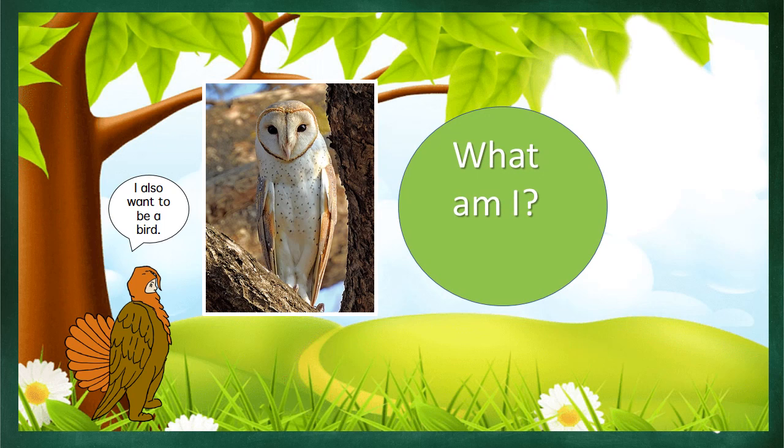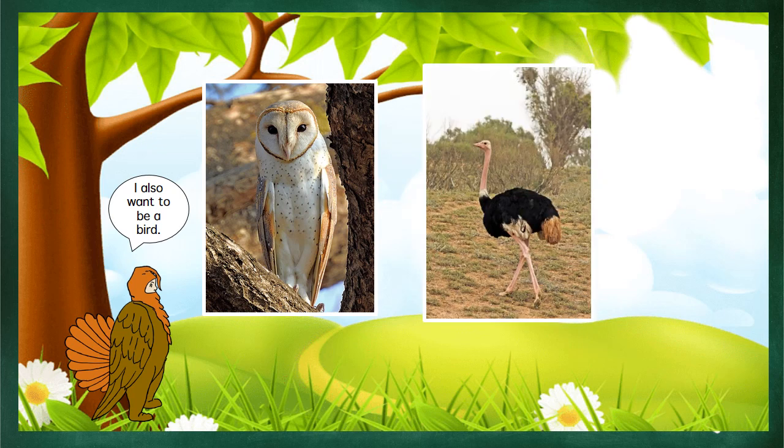The next bird says: I am the world's largest bird. I am terrestrial and I don't fly. I have long legs and a long neck that protrudes from my round body. Males have bold black and white colouring to attract females. I am the only bird with two toes on each foot. I am an omnivore and I have the largest eyes of all land animals. I eat vegetation and meat — I prefer plants, especially roots, seeds and leaves, but also eat locusts, lizards, snakes and rodents. What am I?